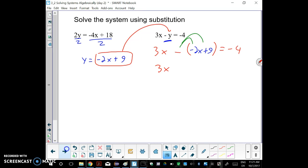It's going to look like 3x minus (negative 2x plus 9) equals negative 4. So 3x plus 2x minus 9 equals negative 4. When you distribute the negative, it becomes like a minus 9. And that's real tricky when you have a negative there, so just be careful. If you didn't get it right, that's likely the reason.